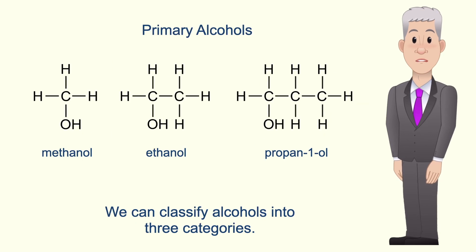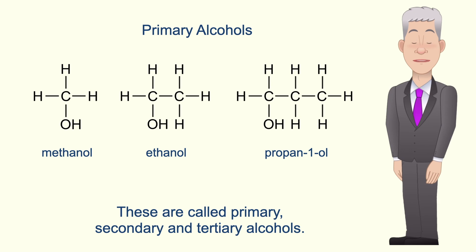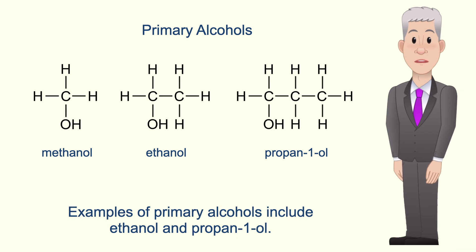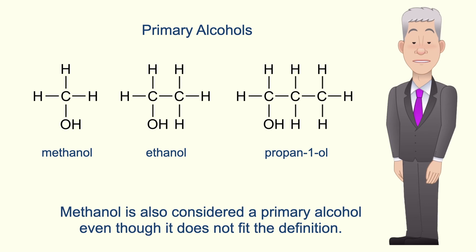Now we can classify alcohols into three categories: primary, secondary and tertiary alcohols. In primary alcohols the carbon atom bonded to the hydroxyl group is bonded to one other carbon atom. Examples of primary alcohols include ethanol and propan-1-ol. Methanol is also considered to be a primary alcohol even though it does not fit the definition.